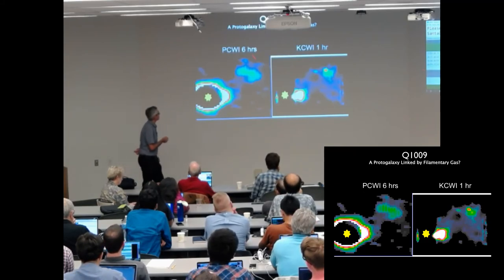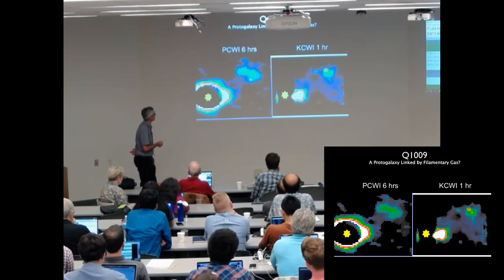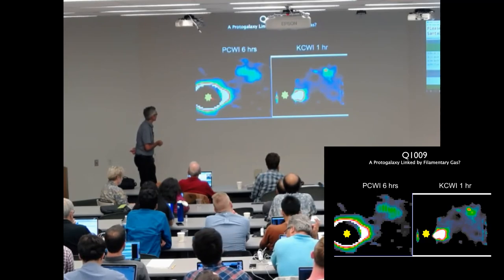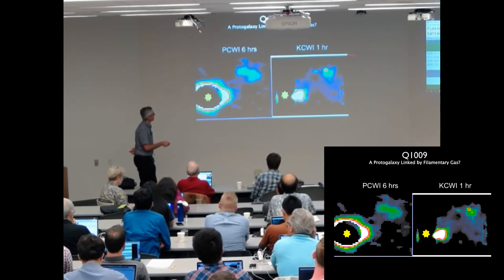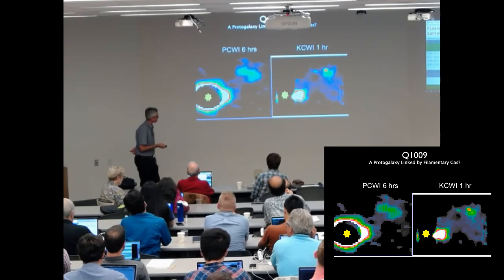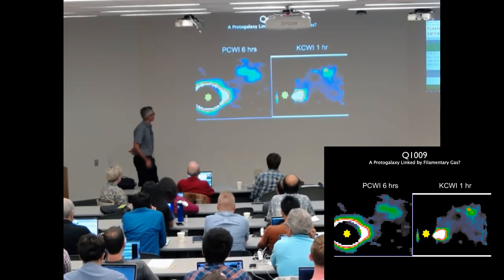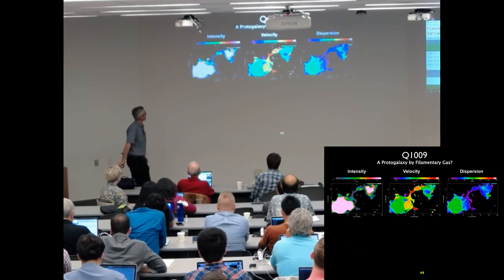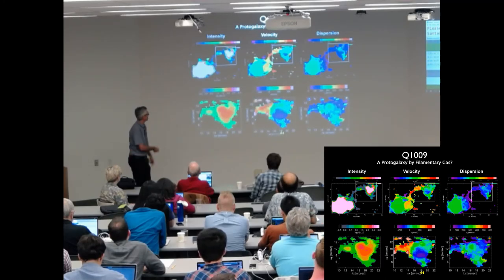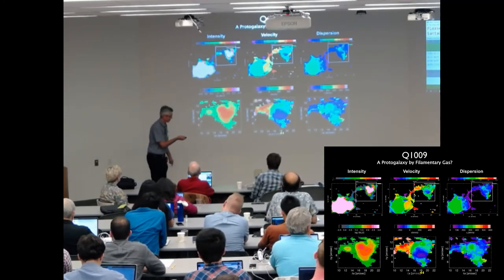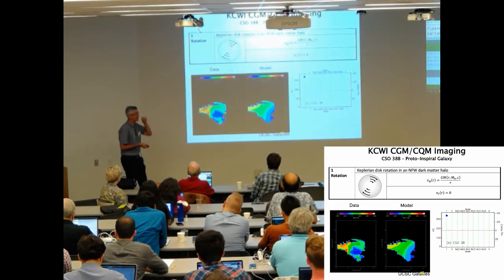This is an object, Q109 or CSO38. That's the object. And there's a Lyman-alpha blob near it. That's the PCWI observation, KCWI in one hour. Intensity, velocity, dispersion, and a blow up around the object itself. Intensity, velocity, and dispersion. We're going to apply this same trick.